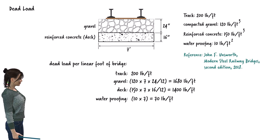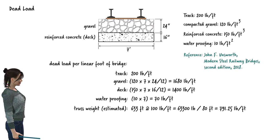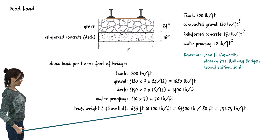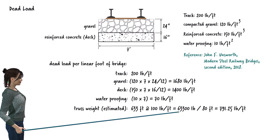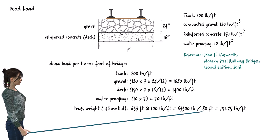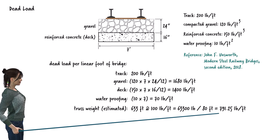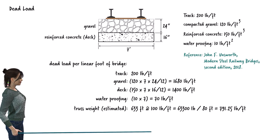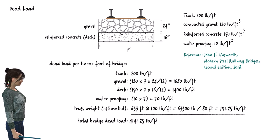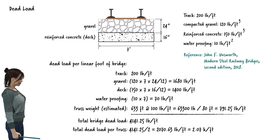In addition, we add the estimated weight of the steel members forming the bridge to the dead load. The two trusses, the three cross beams, and the bracings at the top of the bridge have a combined member length of 633 feet. Assuming a weight of 100 pounds per foot for standard W-shaped sections, we get a total weight of 63,300 pounds. Since the bridge has an overall length of 80 feet, the truss member weight per foot is 791.25 pounds. Adding these weights, we get a total weight of 4,141.25 pounds per linear foot of the bridge, supported by the two side trusses. Therefore, each truss must carry a uniformly distributed dead load of 2.07 kips per foot.